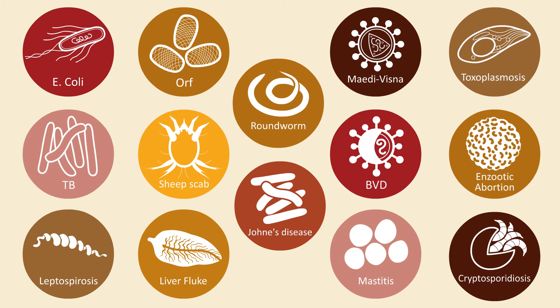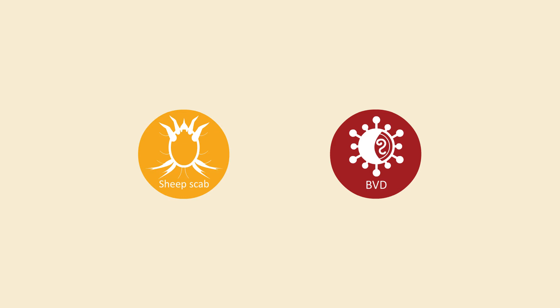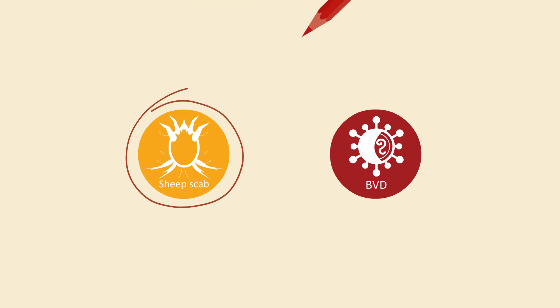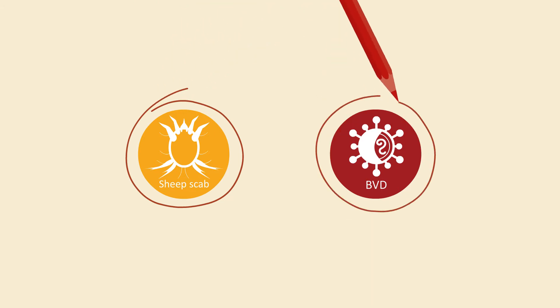But where do you start? Don't rush off to tackle all the diseases you can think of. Instead, work with your vet to identify the one or two diseases that are causing you the most trouble, and put all your energy into tackling them first. Two livestock diseases of high economic importance where biosecurity is critical are sheep scab and bovine viral diarrhoea, or BVD.